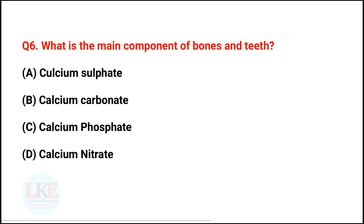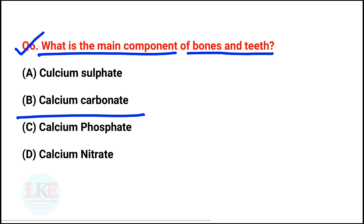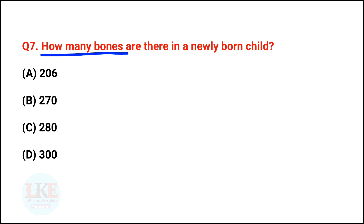Question number 6: what is the main component of bones and teeth? A) Calcium sulphate, B) Calcium carbonate, C) Calcium phosphate, D) Calcium nitrate. The right answer is option C — calcium phosphate. Question 7: how many bones are there in a newly born child? The right answer is option D — 300.